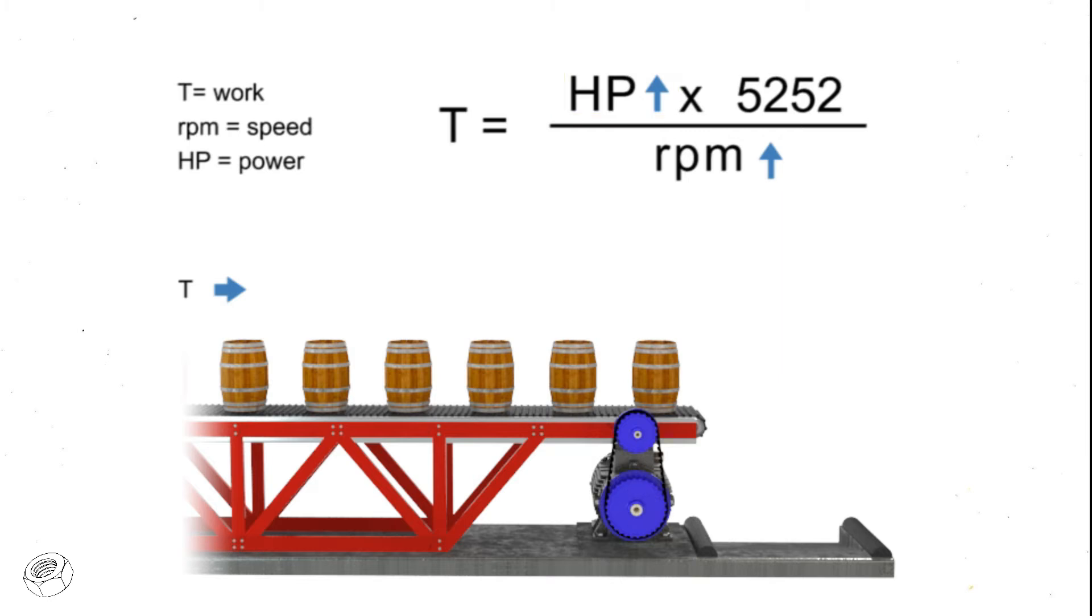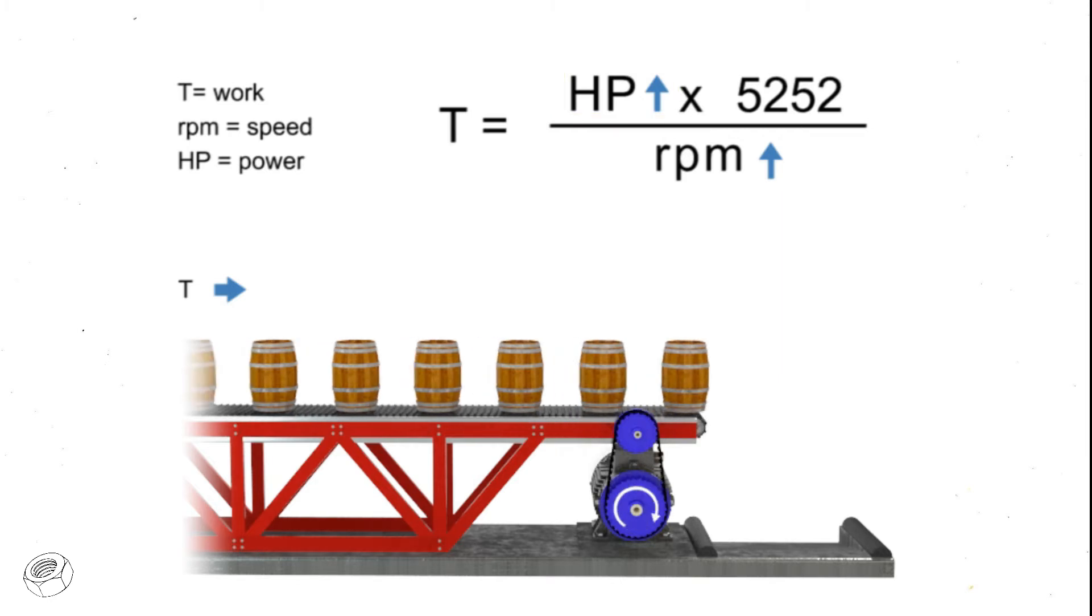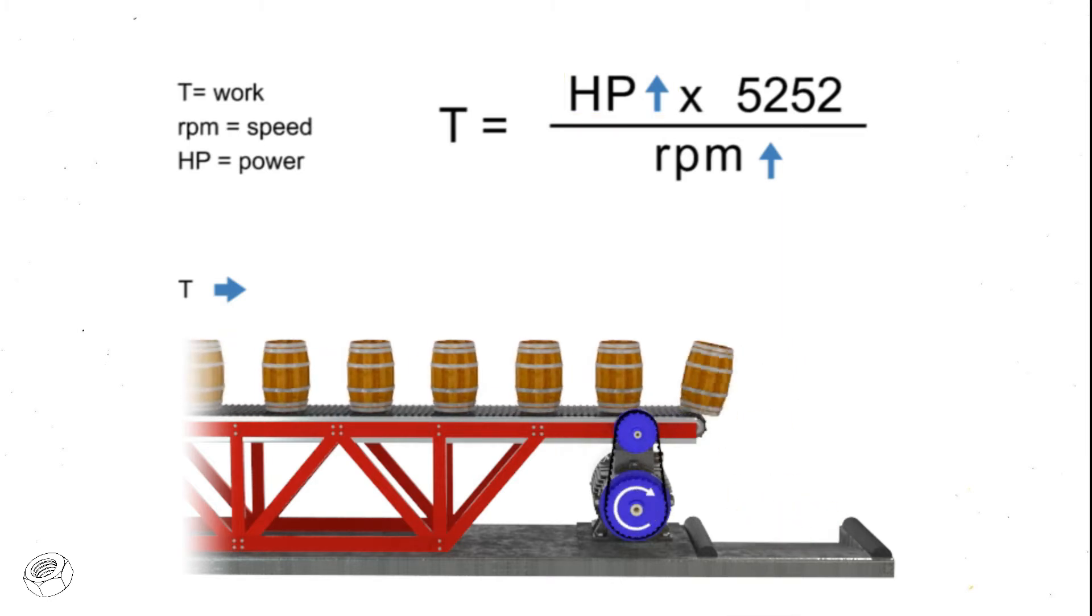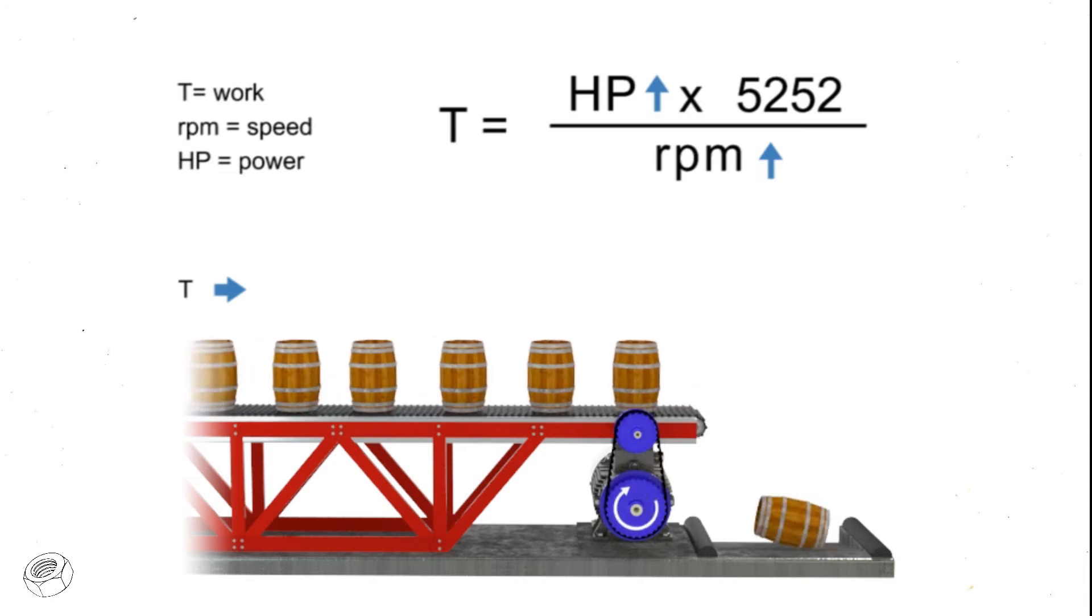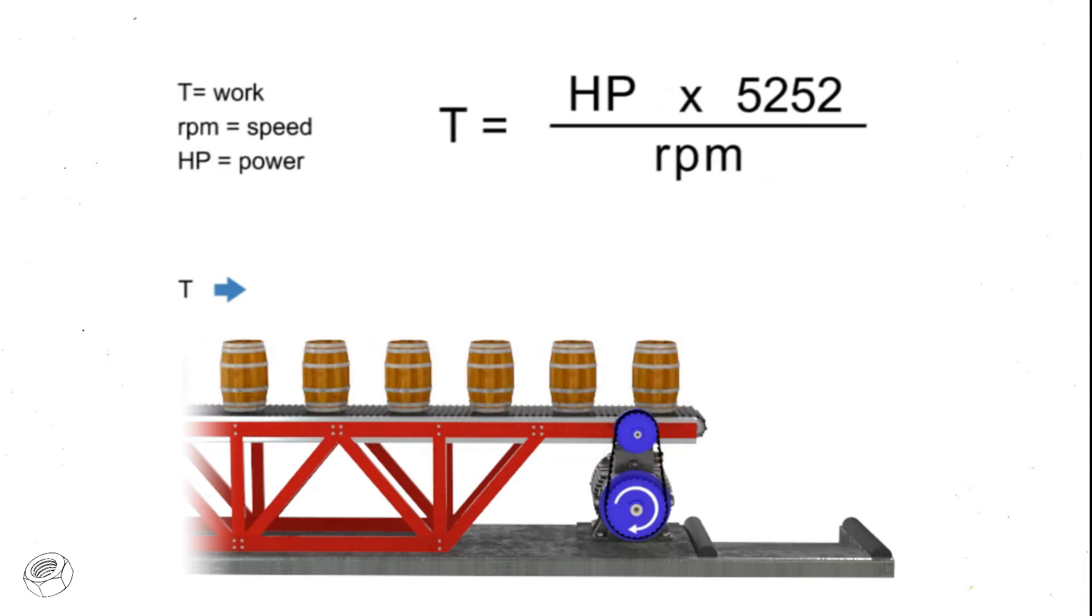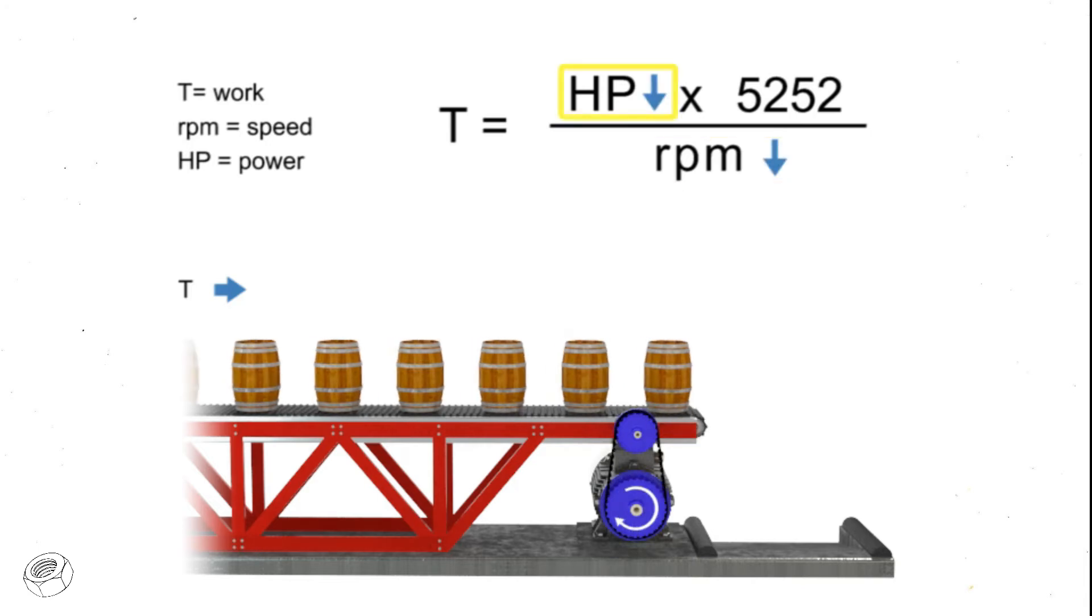In other words, a more powerful motor is required to produce the same amount of torque more quickly. Similarly, the opposite is true. If we wish torque to remain constant and decrease speed, then the horsepower of the motor also decreases.